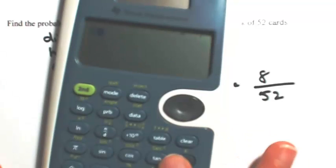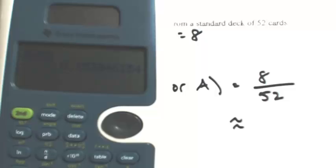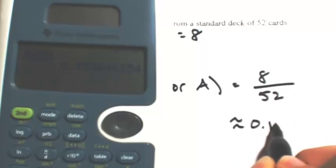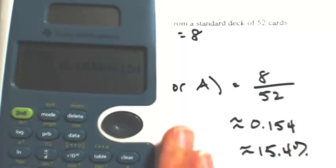Dividing this out, eight divided by 52, let's go three decimal places: 0.154. As a percentage, 15.4% chance.